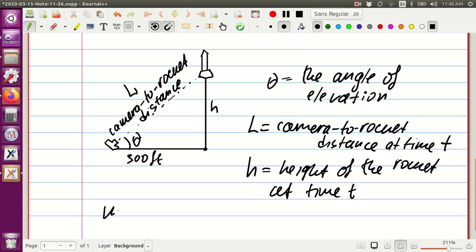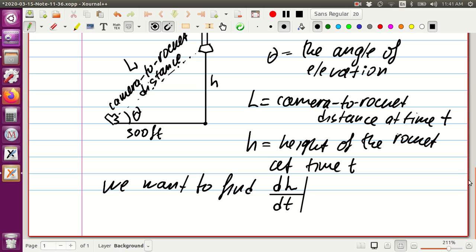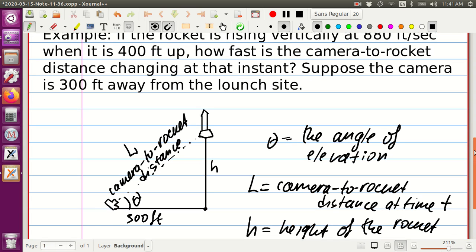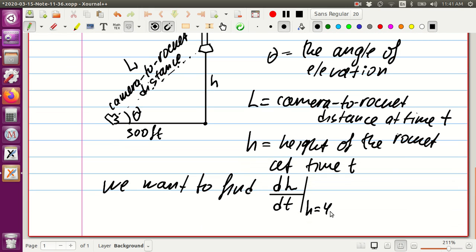So what do we want to find? We want to find how fast the distance from the camera to rocket is changing. Basically, we would like to find the rate of change of L. And when do we want to find the rate of change of L? We want to find it when h is equal to 400 feet.